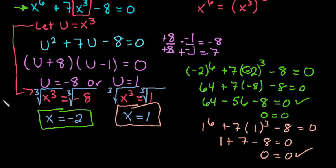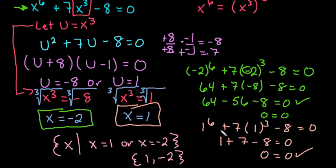Depending upon which text you are using or what your professor or your teacher's expectations are, you can rewrite this as in set notation saying that x such that x equals 1 or x equals negative 2 is one way of writing it. Sometimes it's also just written as 1 comma negative 2 in set notation. As always, thanks for watching.